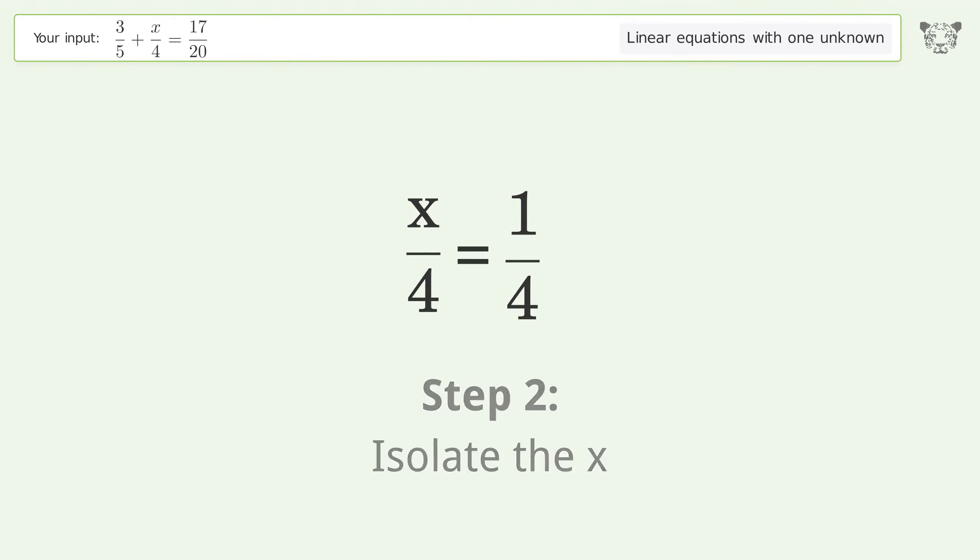Isolate the x. Multiply both sides by four. Group like terms.